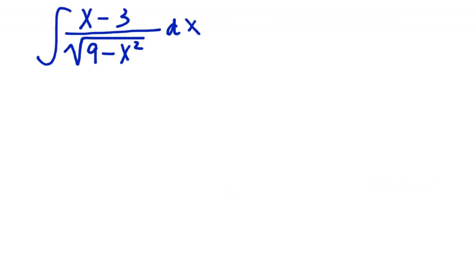All right. Integral of x minus 3 all over the square root of 9 minus x squared. So I look at that denominator and I see an a squared and a u squared. But the numerator isn't simply du. So what can I do to manipulate this? Any ideas? Well, let's try separating the numerator.